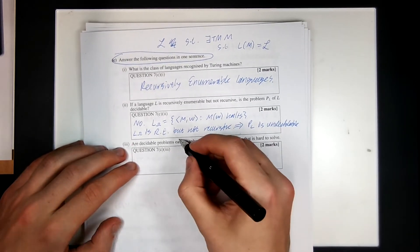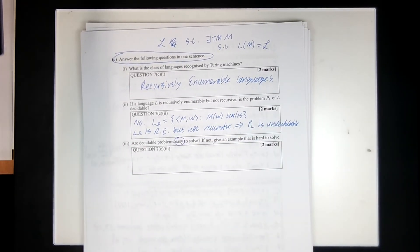Are decidable problems easy to solve? If not, give an example that's hard to solve. What's easy mean? Well, in computer science, when we say easy, we usually mean we can solve this problem in polynomial time. So, for example, string reversal. I can do string reversal in polynomial time. I can sort a list. I can compute a histogram. I can do a bunch of stuff in polynomial time.